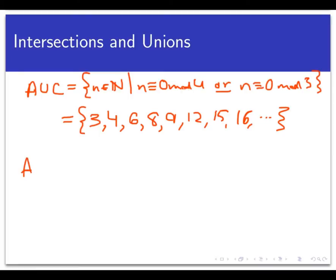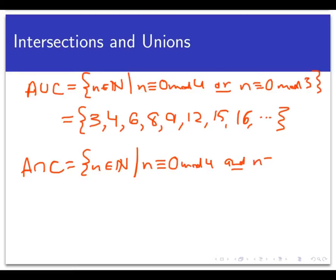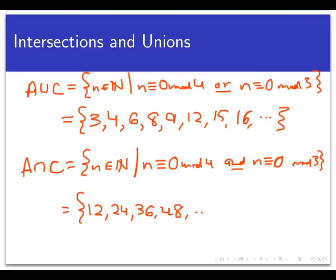Now let's look at the intersection of A and C. This would be the set of all natural numbers in both A and C at the same time — just like the intersection of two roads, it's on both roads simultaneously. That's the set of all N congruent to 0 mod 4 AND congruent to 0 mod 3. So we need natural numbers divisible by both 4 and 3, which amounts to integers divisible by 12: 12, 24, 36, 48, and so forth. Again, 0 is not included because it's not a natural number.